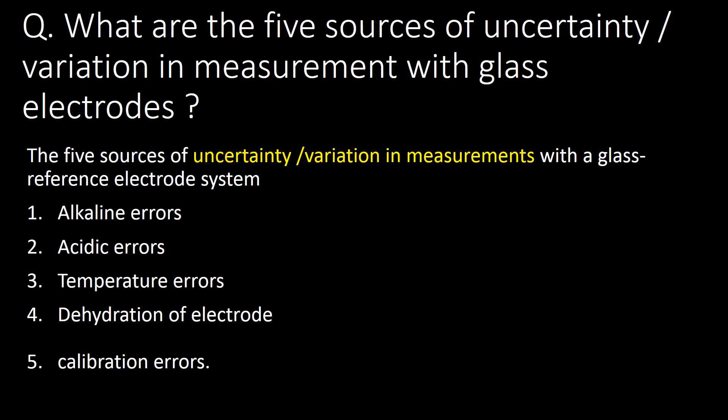What are the five sources of uncertainty or variation in measurement with a glass electrode? The five sources of uncertainty or variation in measurements with a glass reference electrode system are: alkaline errors, acidic errors, temperature errors, dehydration of the electrode, and calibration errors.